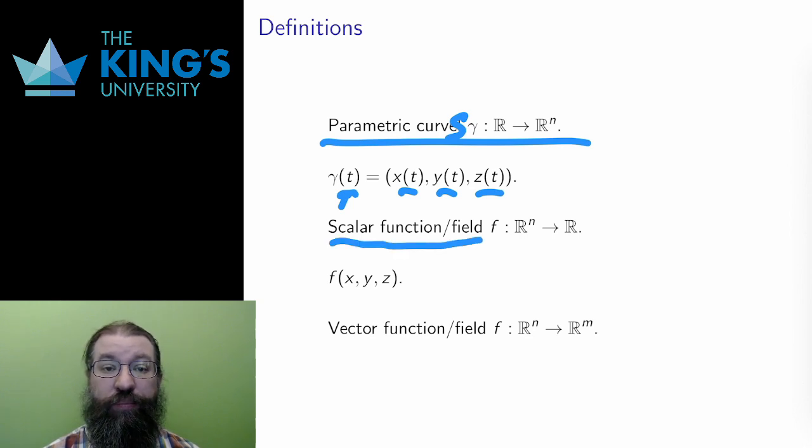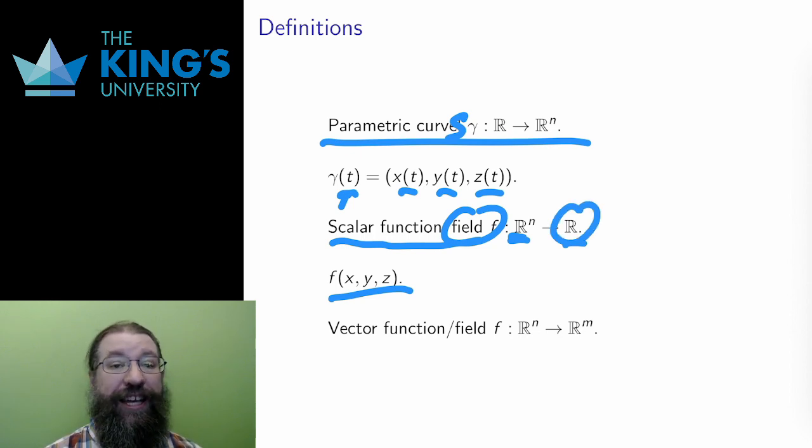A scalar field has multiple inputs. In R³ again, say x, y, and z, but only a single output. The word field, at least in this course, means a function with multiple variables of input. A scalar field is a field where the output is a single variable, in vector terms a scalar, and hopefully that justifies the name.